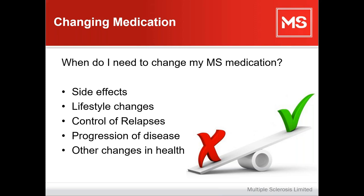Other changes in health are important too. Having MS doesn't mean you can't have other health conditions — for example, breast cancer or another condition might mean your current medication is no longer the safest option. Or MS-related changes, such as increasing numbness or clumsiness in the hands, might make it too difficult to self-administer an injectable therapy.